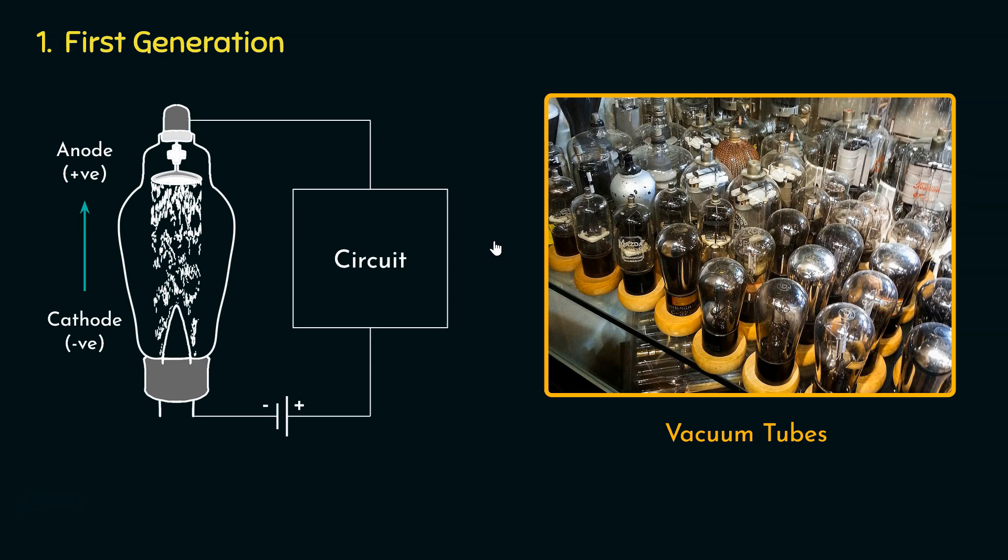Now the question is, if it is just a switch, why was it hailed in the engineering era of 1940s till 1950s? The reason is due to six factors. The vacuum tubes could work as six different components.